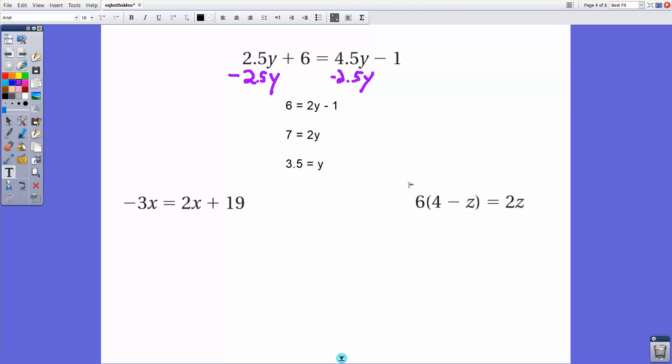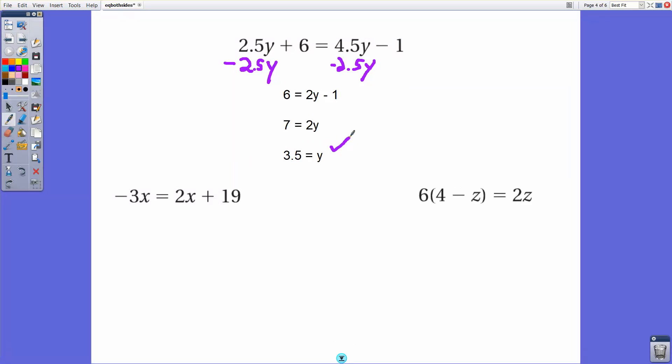If I check my answer here, 3.5 times 4.5 and 2.5 times 3.5, you're going to have 7.25 here. Here, you'll have 9.25 minus 1. And adding 6 and subtracting 1, 4.5 times 3.5 is 14.25 minus 1, 7.25 plus 6, 13.25 on both sides. So this answer does check out. Calculators are always wonderful if mental math is not your strong suit.